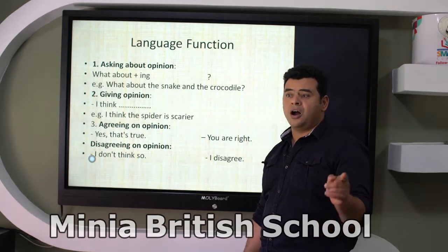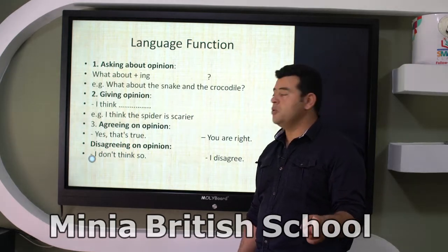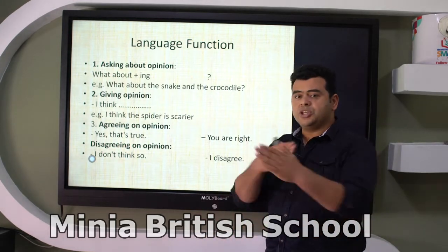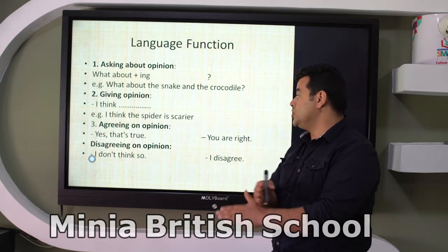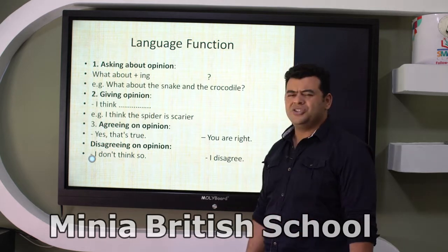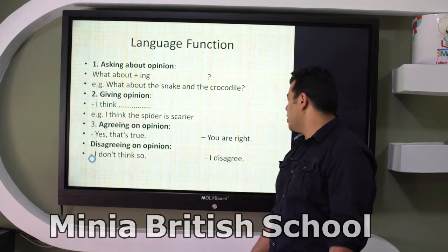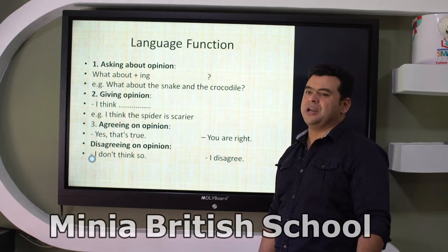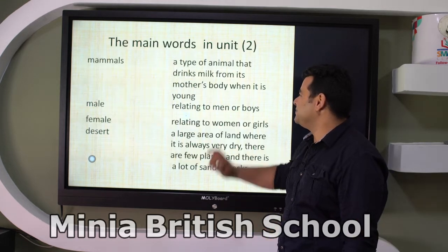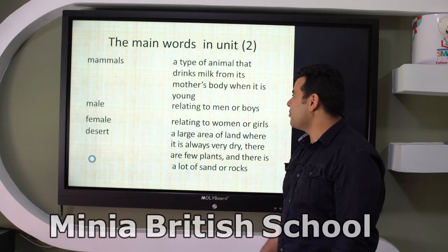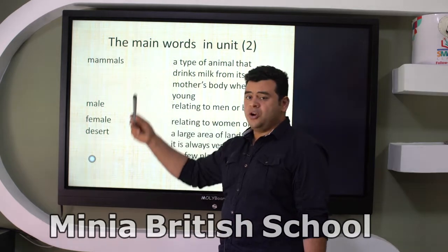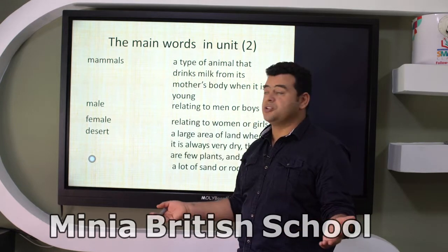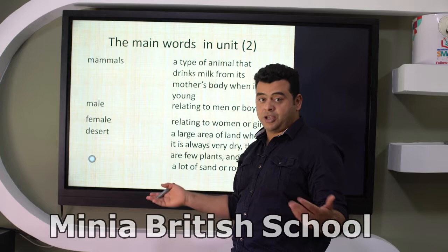So when you give an opinion you can say 'I think.' When you agree with something you say 'I think so' or 'I agree with that.' When you disagree with someone you say 'I don't think so' or 'I disagree.' Animals have a lot of types — like mammals. I know you took them in science, but here is a good chance to revise them. We've got mammals, birds, and fish.